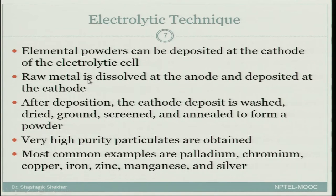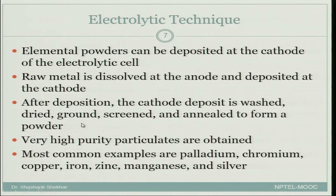At the anode, the raw metal is dissolved. The raw metal will probably not be very pure and will not be in powder state. But the material deposited at the cathode is very pure, and it is usually in powder form. After deposition, the cathode deposit is washed, dried, ground, screened, and annealed to form the powder.